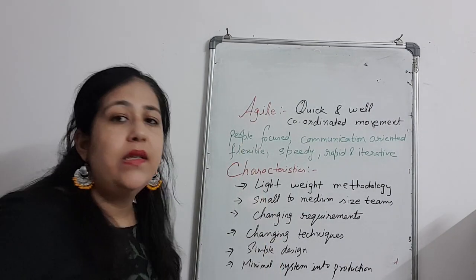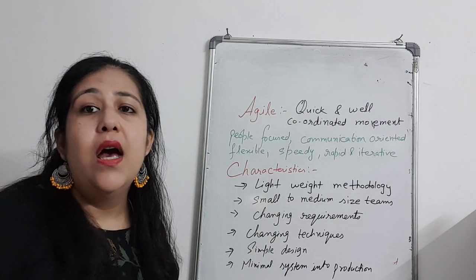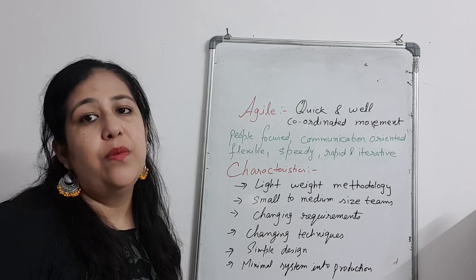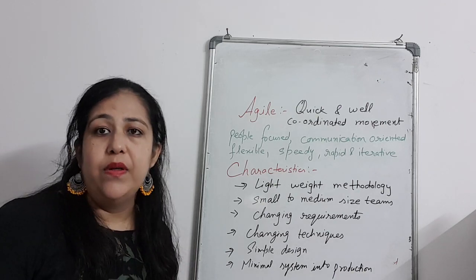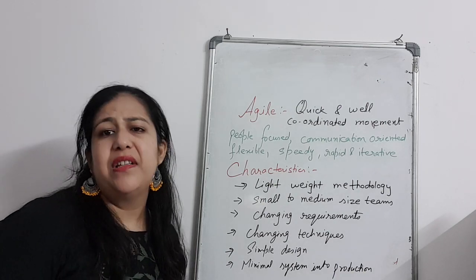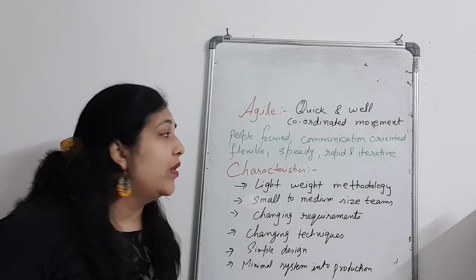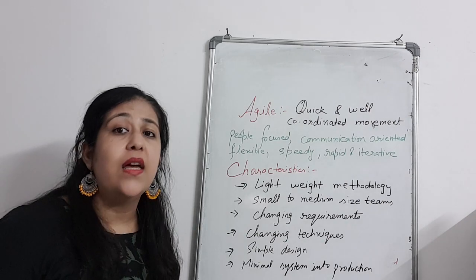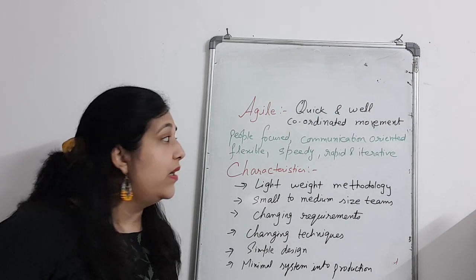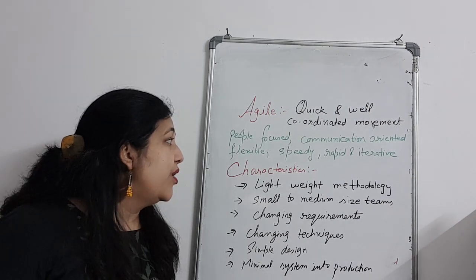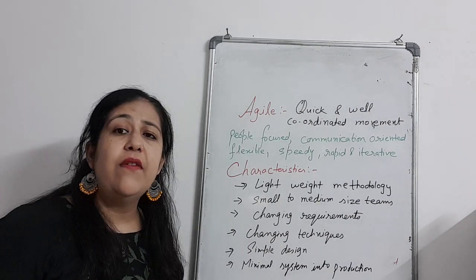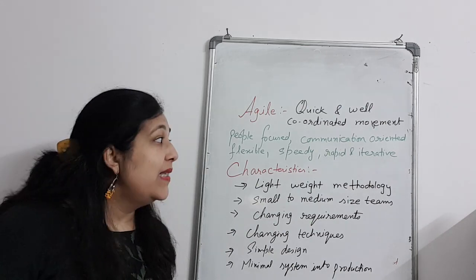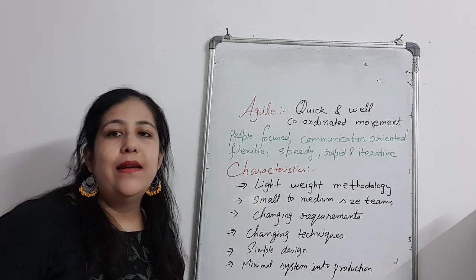Agile is people-focused. We focus on the team we have, which could be anywhere from two people up to six or seven people working together. They are well-coordinated, communication is good, it is flexible, and it is fast and iterative.